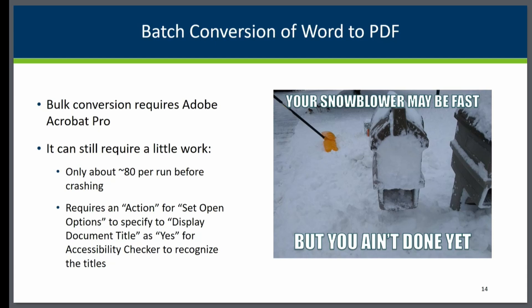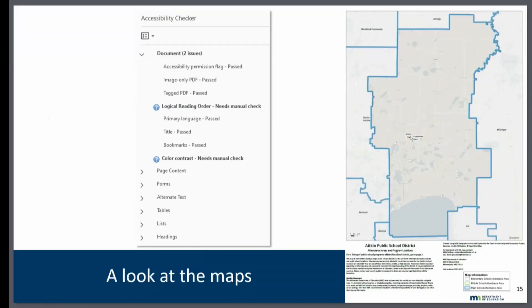At the end, you can go download them yourself. I end up with a PDF where the accessibility checker passes on all fronts. The only two pieces left as question marks are things you would have to manually check — if I didn't do a good job with logical reading order or color contrast, that's on me. We're going to look a little bit at the maps before we wrap up, and then we'll have time for questions. On the right you can just see a pretty simple school district map — it's a rural one, so there's not a lot going on there.